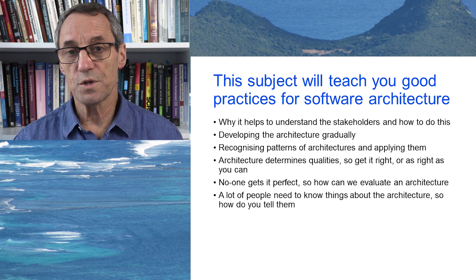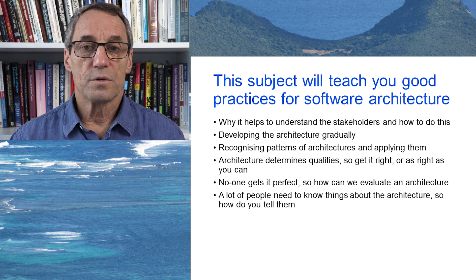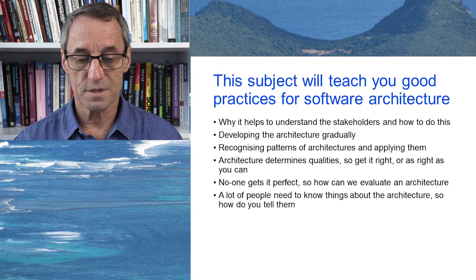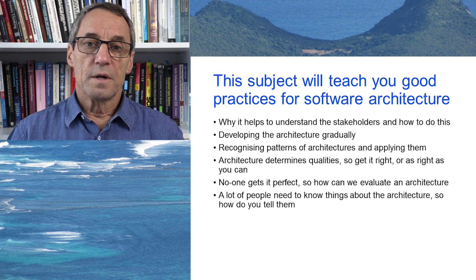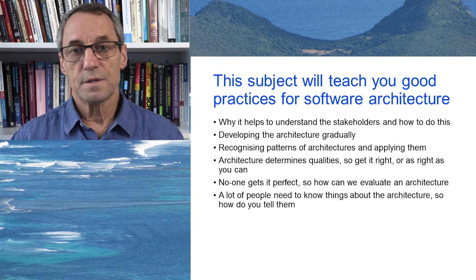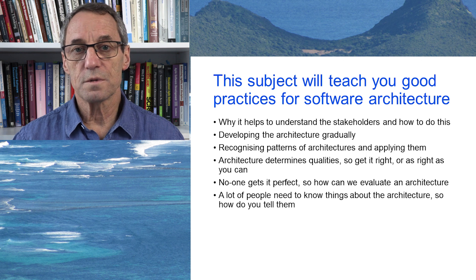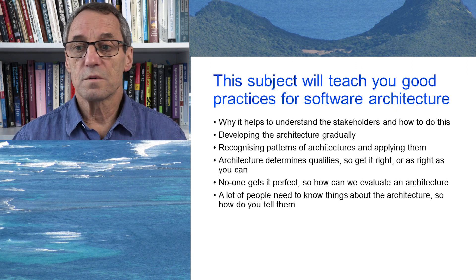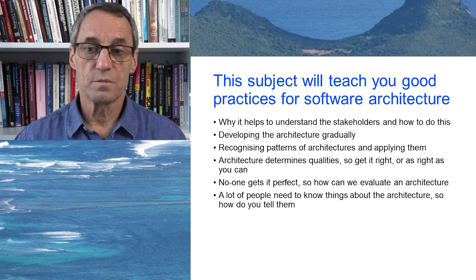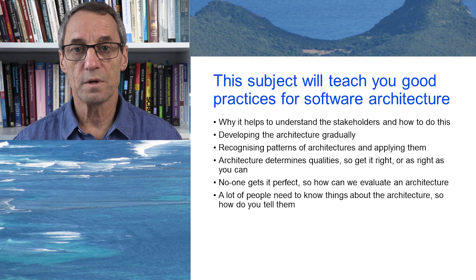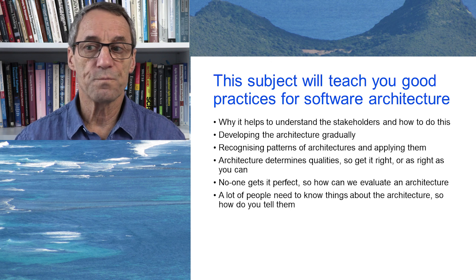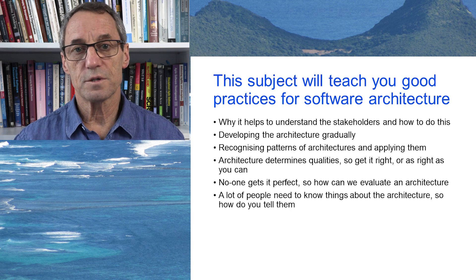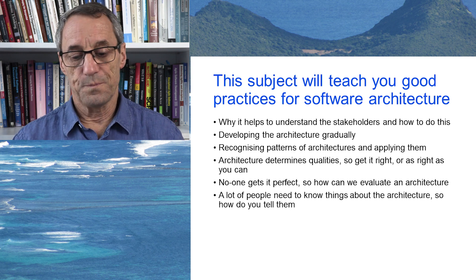An increasingly established principle of the industry is that you get your work reviewed. We have to be able to evaluate an architecture and reason about how it does its job. A lot of people need to know about the architecture — all the stakeholders in different forms. End users may need to know, certainly developers will need to know, and you're probably dealing with several different groups of developers. Testers may need to know, documenters may need to know. The interesting question is how do you tell them? We'll deal with that as well.